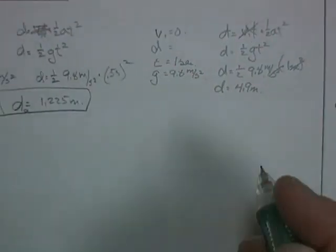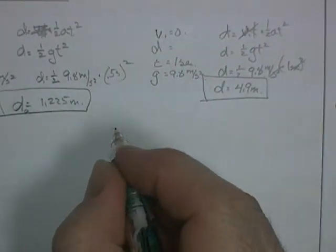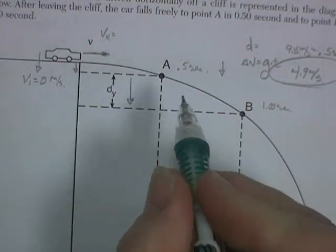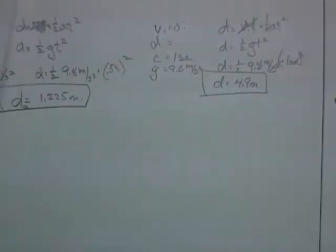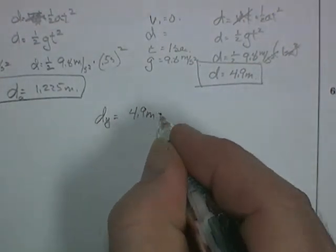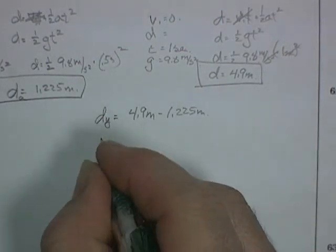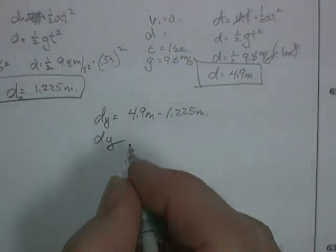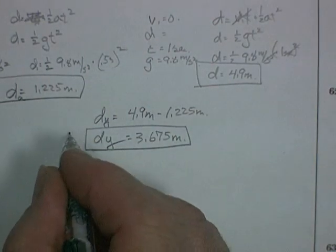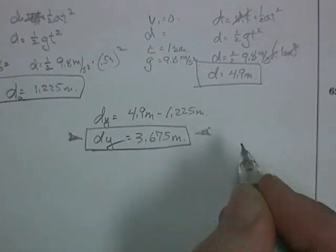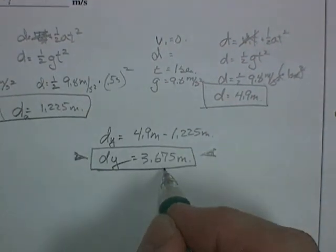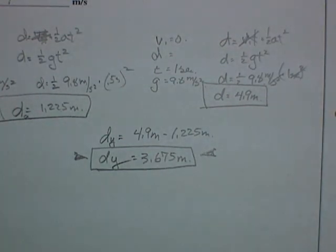And so my difference in distances, the distance that it fell between those two points, is going to be wherever this is minus whatever that is. So this should be easy. Distance Y is going to be 4.9 meters minus 1.225 meters. So distance Y should be equal to 3.675 meters. Make sure they know. Found the distance to A, distance to B. They're asking for the difference in those two distances, and that's right there. Got that one done.